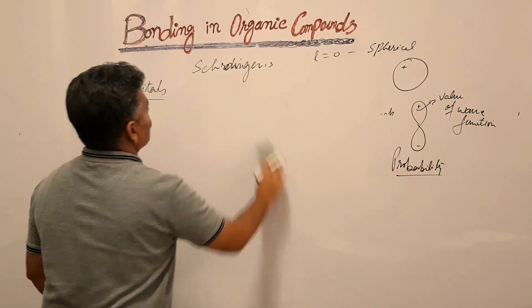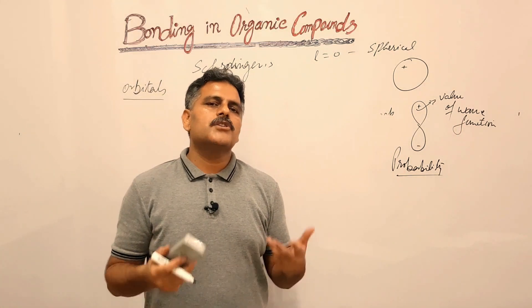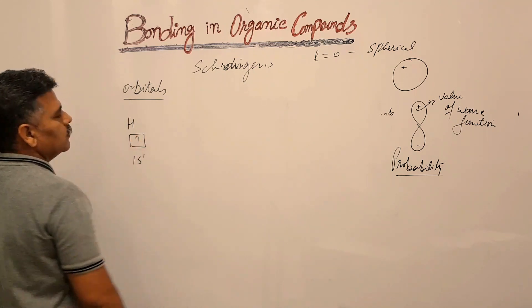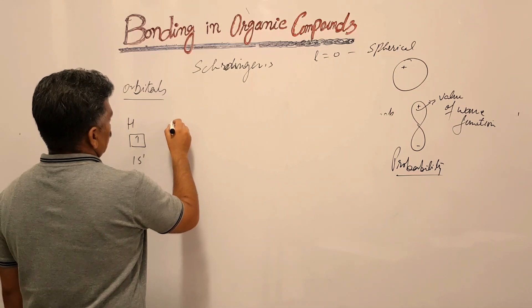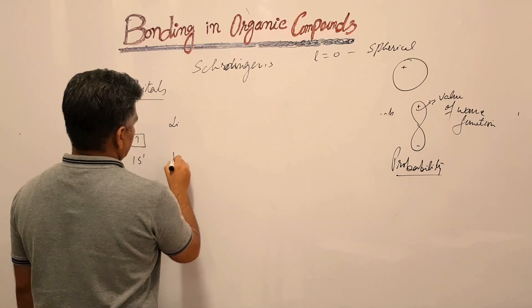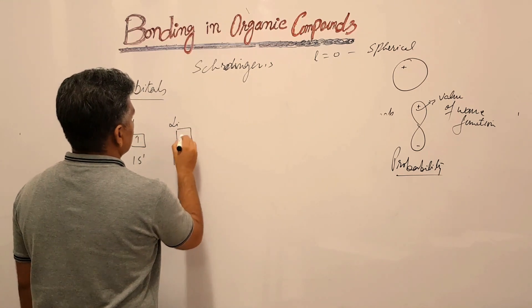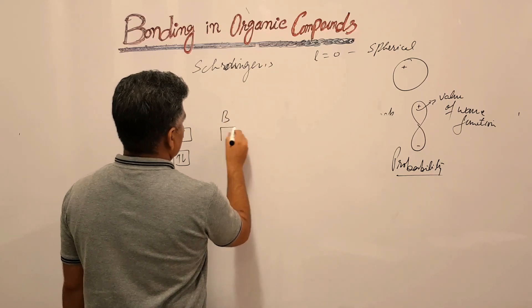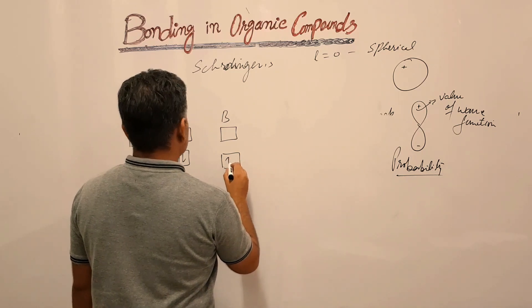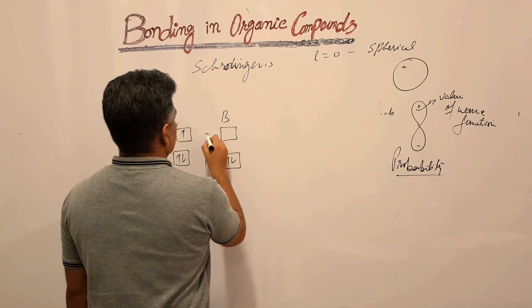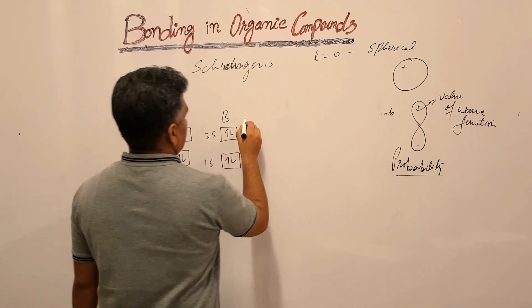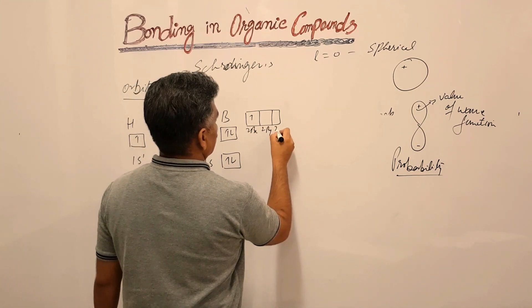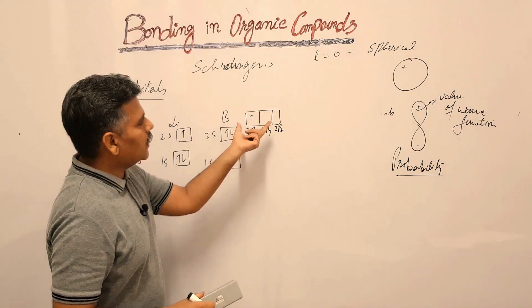When we distribute electrons in these orbitals, consider hydrogen — it has only one electron in 1s1. For lithium, we have 1s2 and 2s. Then we have 2p, with 2px, 2py, and 2pz. These are degenerate orbitals — they have the same energy. There are three of them because when we solve for the magnetic quantum number, we get three orientations.